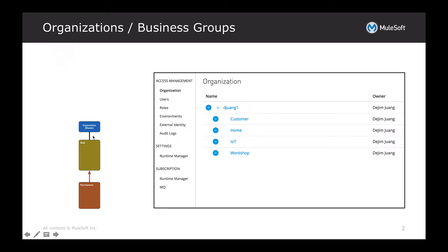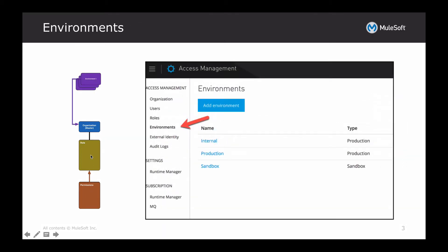Each organization has a set of roles, and then you assign permissions to each of these roles within the platform for the user. Next, you have environments. So with an organization, you can create either a production environment or a sandbox environment, and you can have multiples of each.